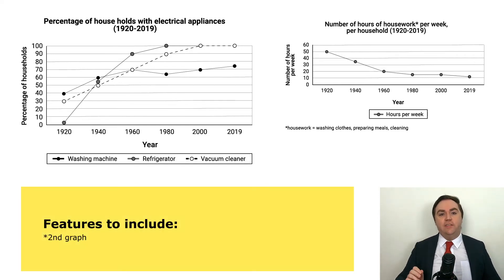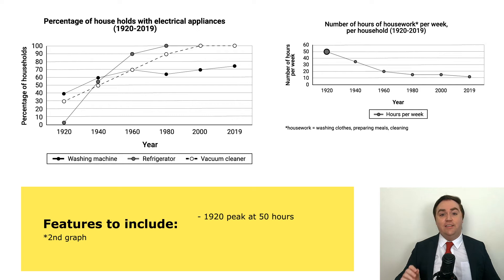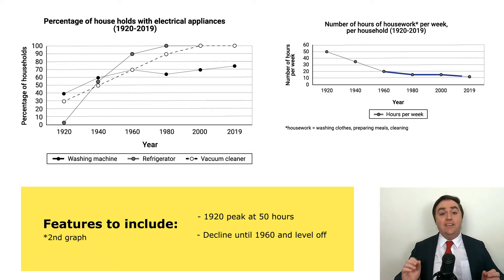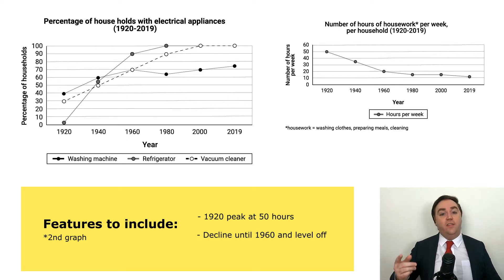The high point we must include for graph 2 is in 1920. At this point, the hours of housework is highest at 50. It steadily declines until 1960, at which point it levels off. This analysis tells us exactly the important dates and data for graph 2: 1920 at 50 hours, then a decline to 1960 at 20 hours and leveling off.